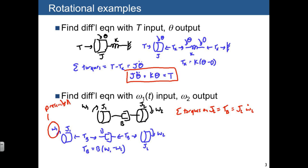Where Tb we already know. So the differential equation is J2 times omega 2 dot plus B omega 2 is equal to B times omega 1. This is in input-output form. And so we've produced our differential equation with omega 1 as input and omega 2 as output.